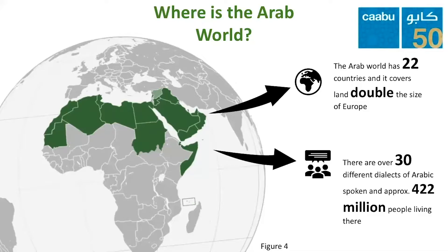The Arab world covers land double the size of Europe and it's spread right the way across North Africa, Western Asia, and the Horn of Africa. There are 22 countries in the Arab world, over 30 different dialects of Arabic spoken — meaning 30 different types of Arabic — and approximately 422 million people living there.